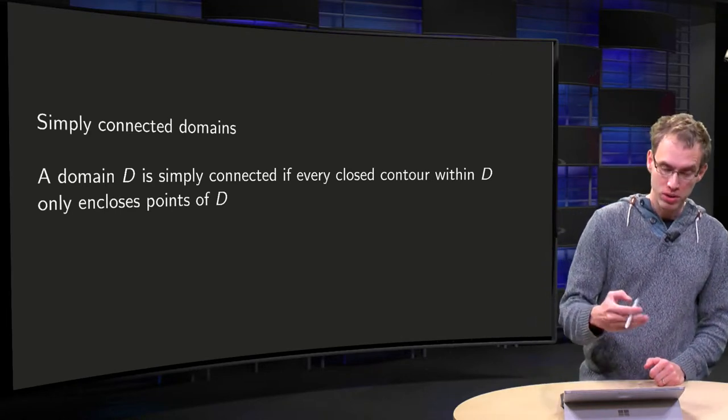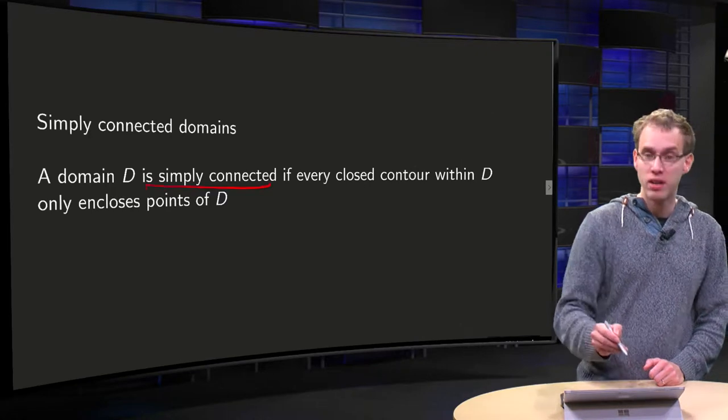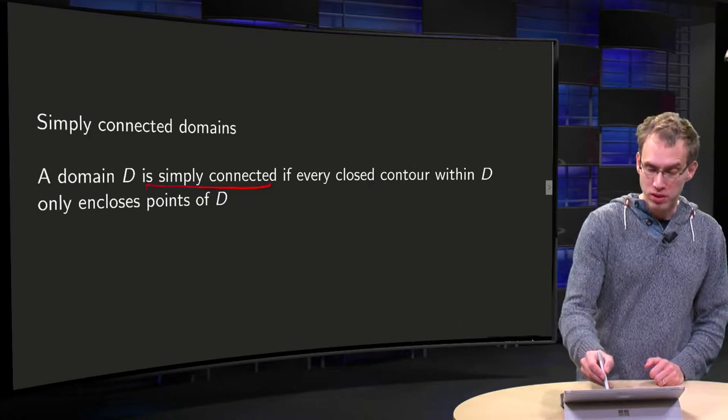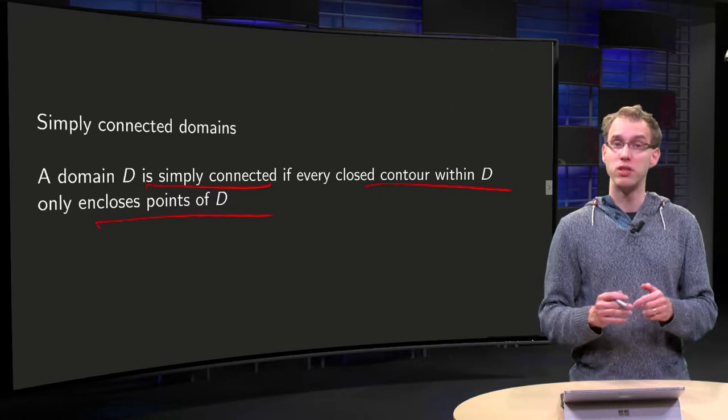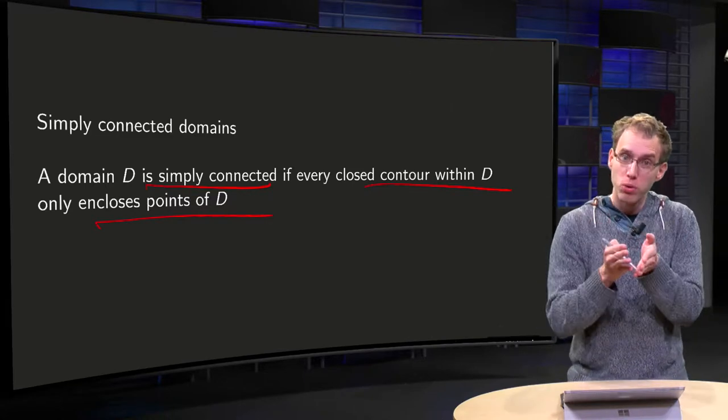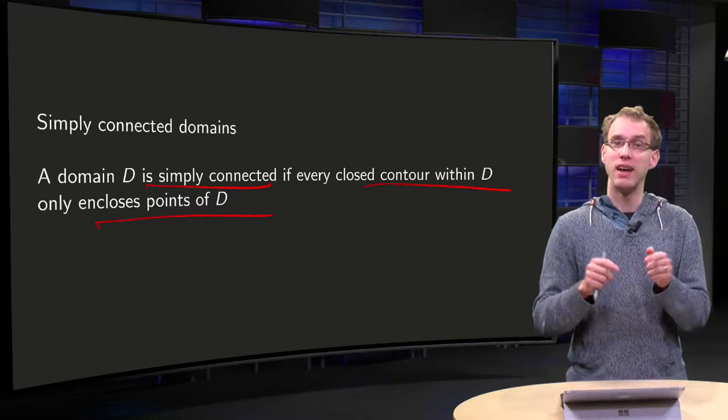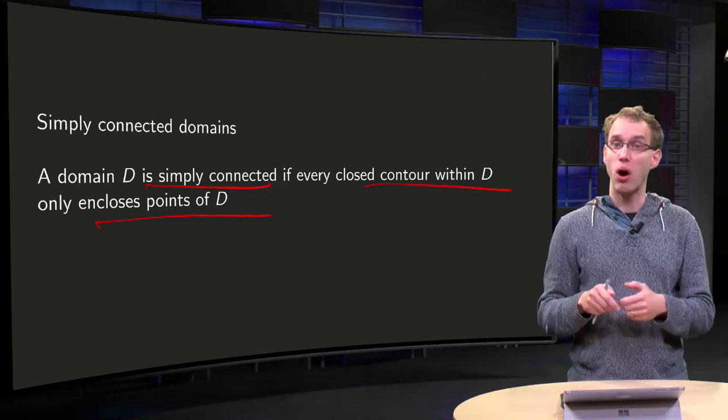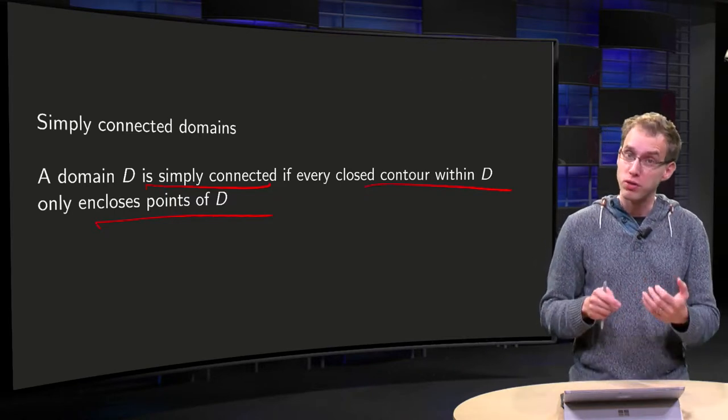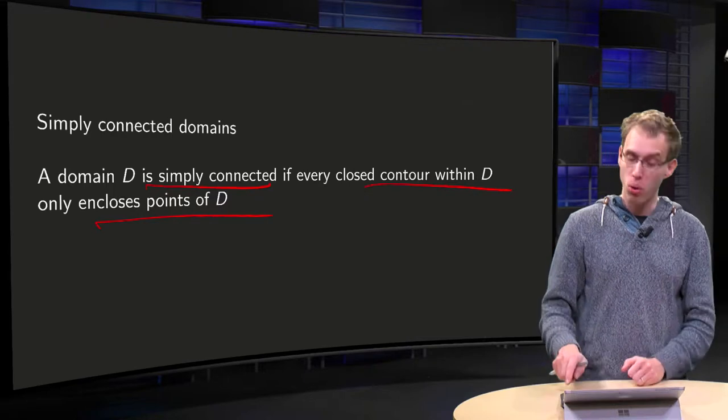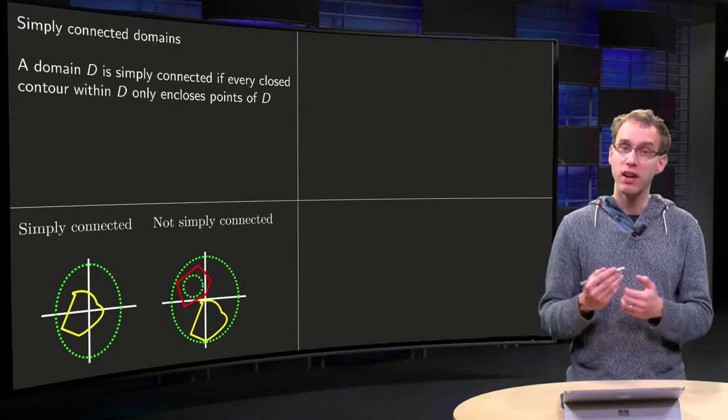Domain D is called simply connected if every closed contour within D only encloses points of D. So you draw some closed contour inside D, and then inside your contour you can only have points of D. This should hold for all contours. So let's look at a figure.